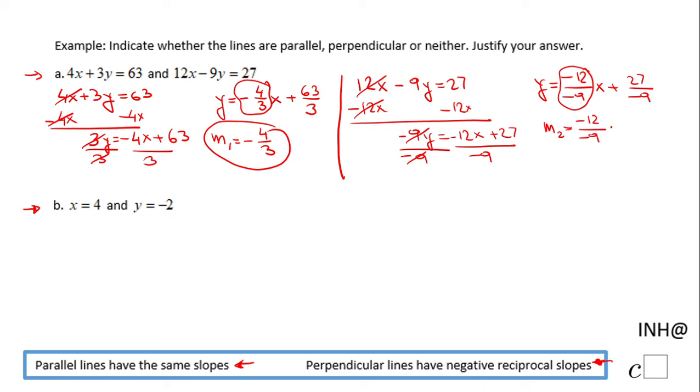You notice we have two negatives which cancel out, so we have 12 over 9, and both 12 and 9 are divisible by 3. We can simplify and we get 4 thirds. The second slope is 4 thirds.